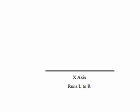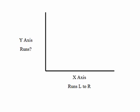Let's review. This is called the X axis. Nobody really knows why — it's arbitrary, it doesn't even look like an X. But remember from geometry class: the X axis runs left to right. Now, this is the Y axis, and it seems to run top to bottom.